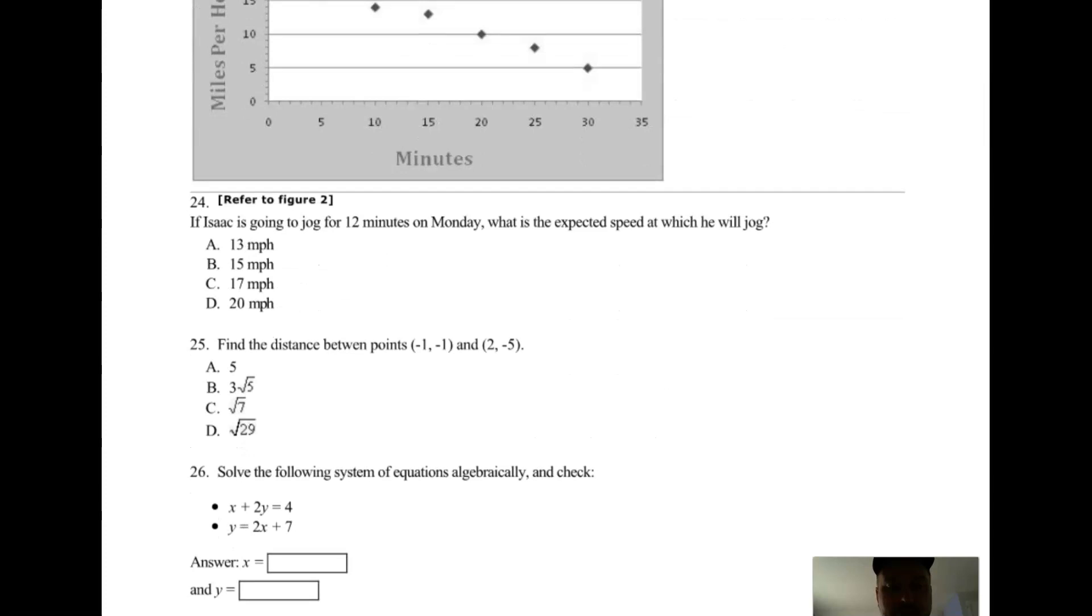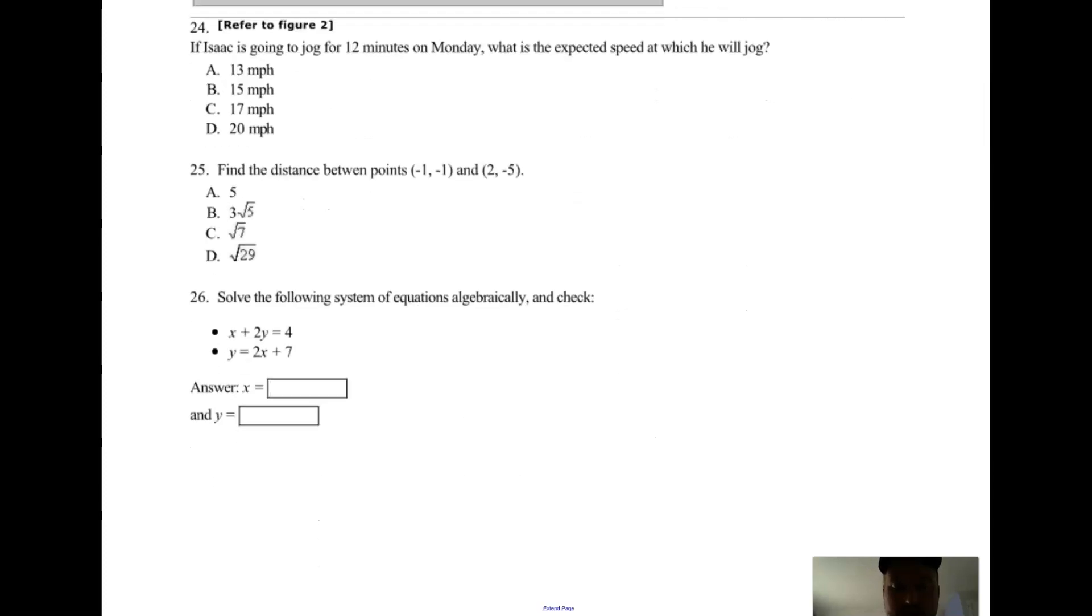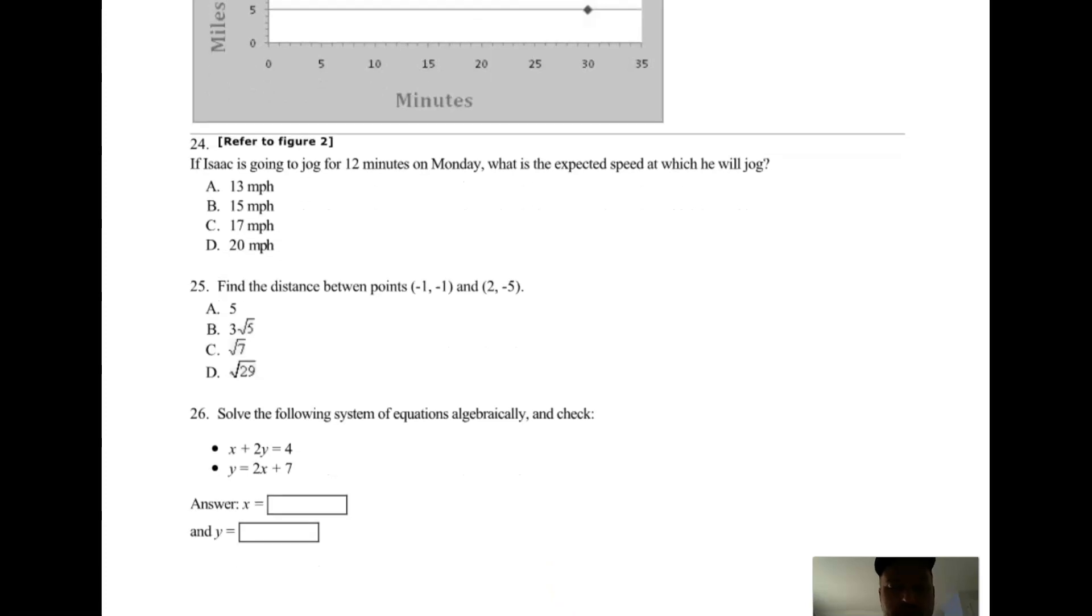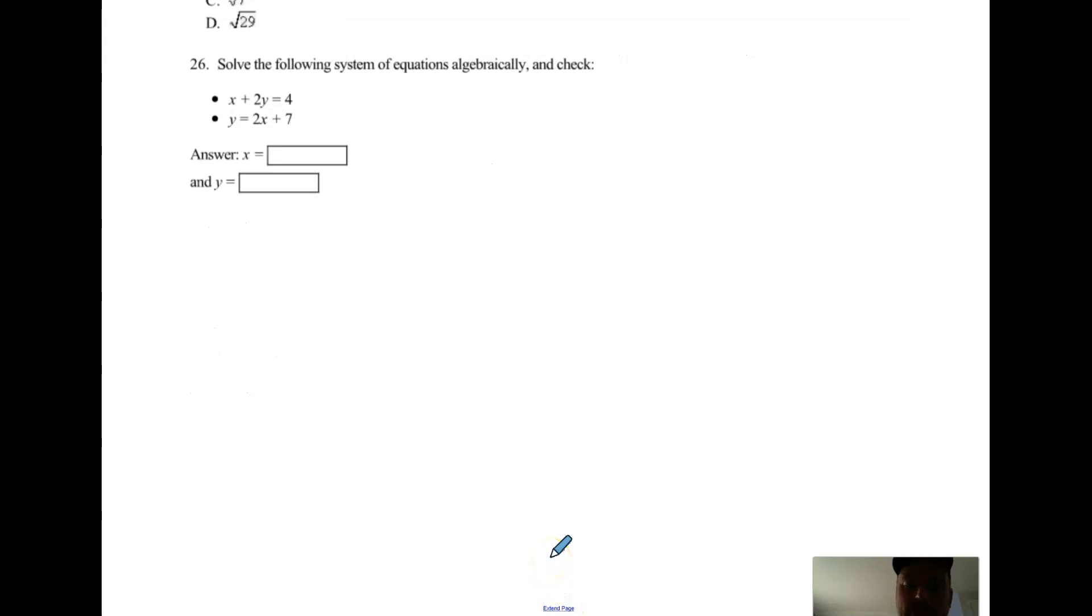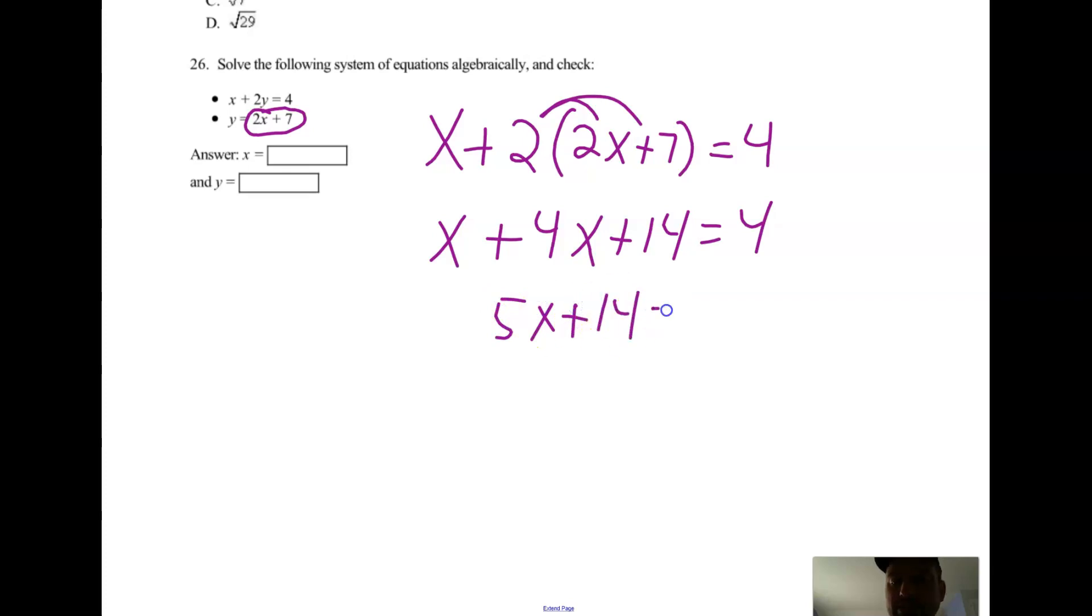Okay, 25 you did not have to do. 26: solve the system. So to solve the system, notice how there's a y equals. So what you can do is substitute. Where I see a y I'm going to replace it with 2x plus 7. So I've got x plus 2 times (2x plus 7) equals 4. Distribute: x plus 4x plus 14 equals 4. Combine like terms. And pretty quickly you get a basic two-step equation.